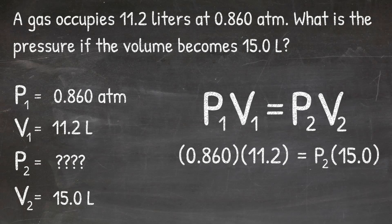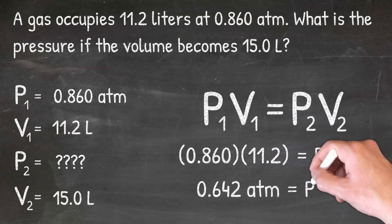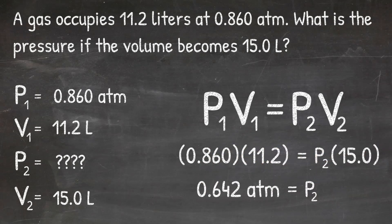Plugging in the values: 0.860 times 11.2, divided by 15.0, gives a new pressure of 0.642 ATM. This makes sense according to Boyle's Law — the volume is increasing from 11.2 liters to 15 liters, so with the inverse relationship, the pressure should decrease. We started at 0.860 ATM and ended at the lower value of 0.642 ATM.